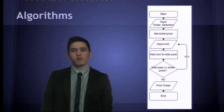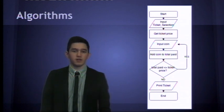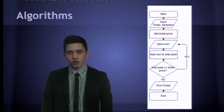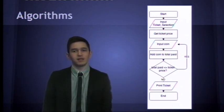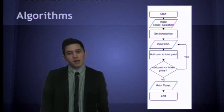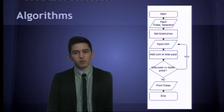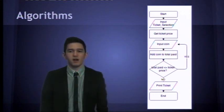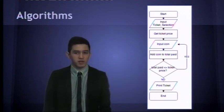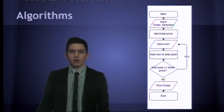So, here's my flowchart. I've got a start, I've got my input, I've got a process to get the ticket price, I've got to input coins, add that coin to the total paid. Is the total paid smaller or equal to the ticket price? If it is smaller, then they have not put enough money in and then it goes around and around and around.